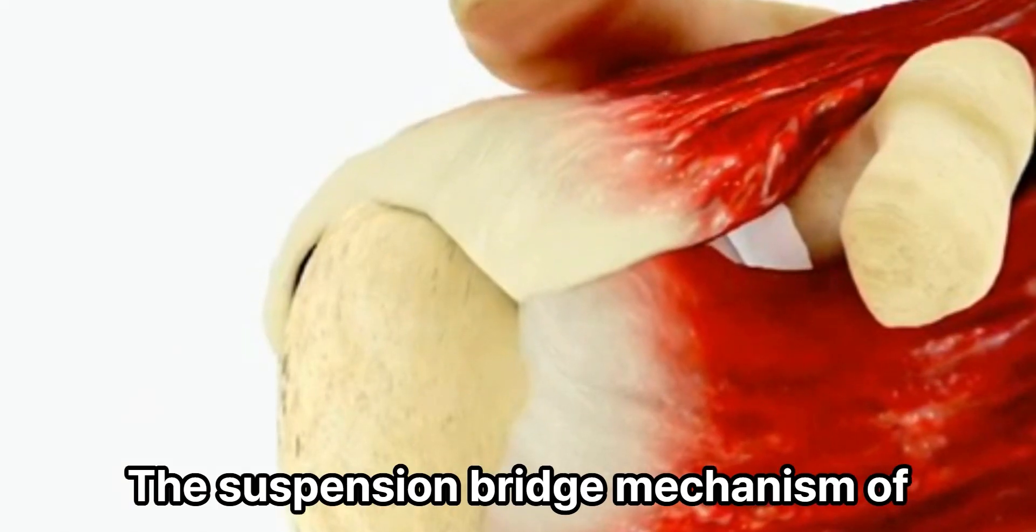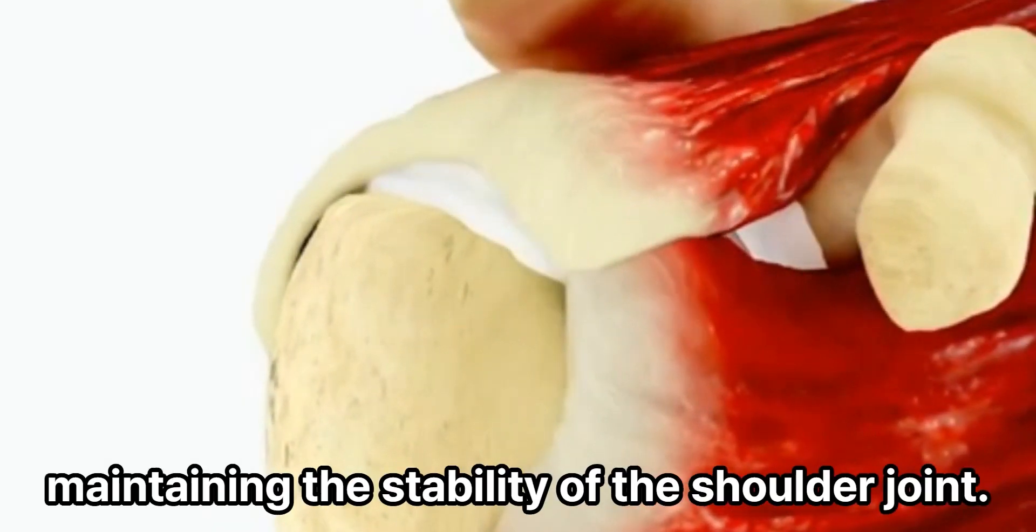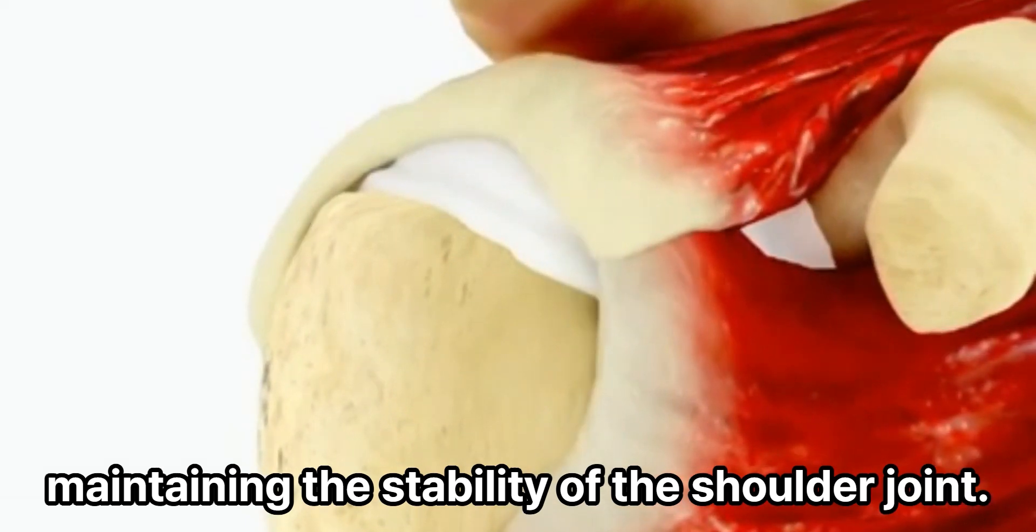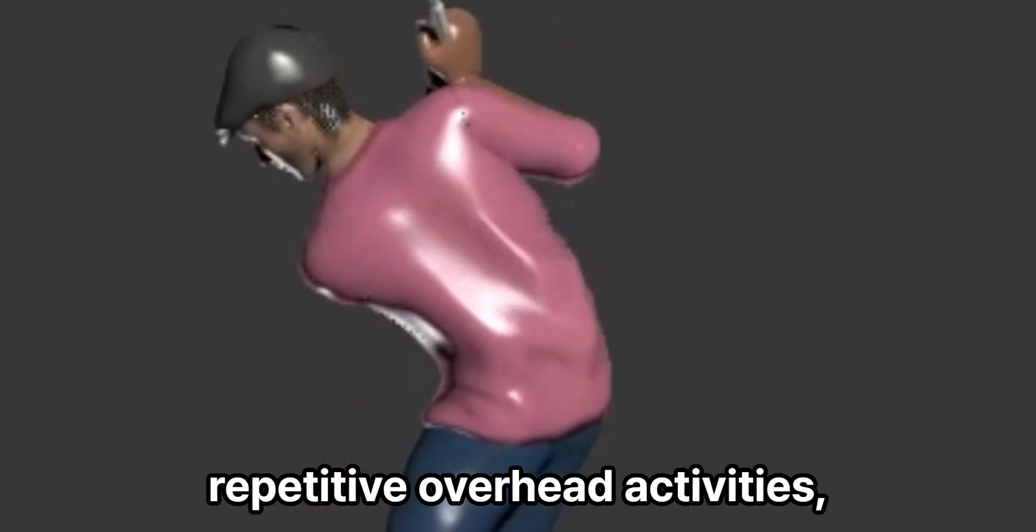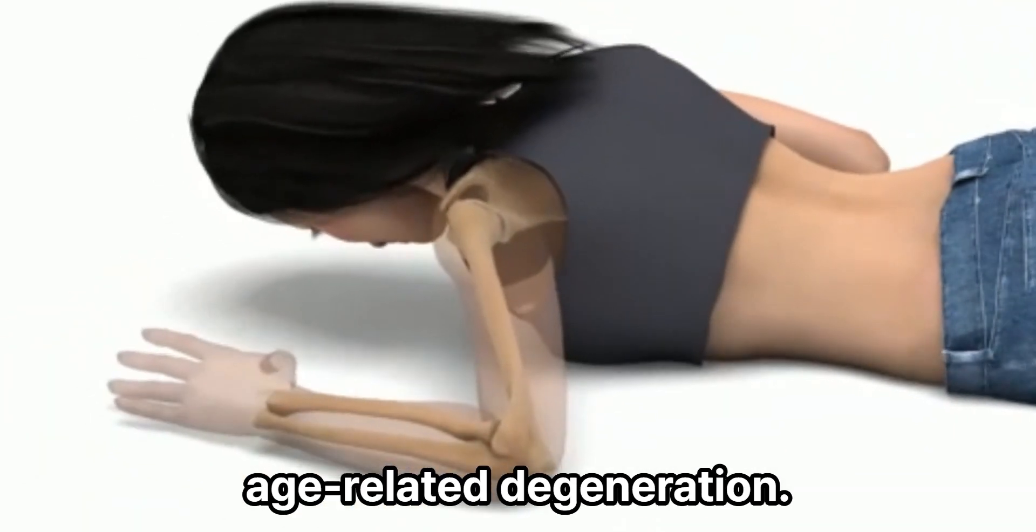The suspension bridge mechanism of the rotator cuff is important for maintaining the stability of the shoulder joint. It can be injured by repetitive overhead activities, falls on an outstretched arm, or age-related degeneration.